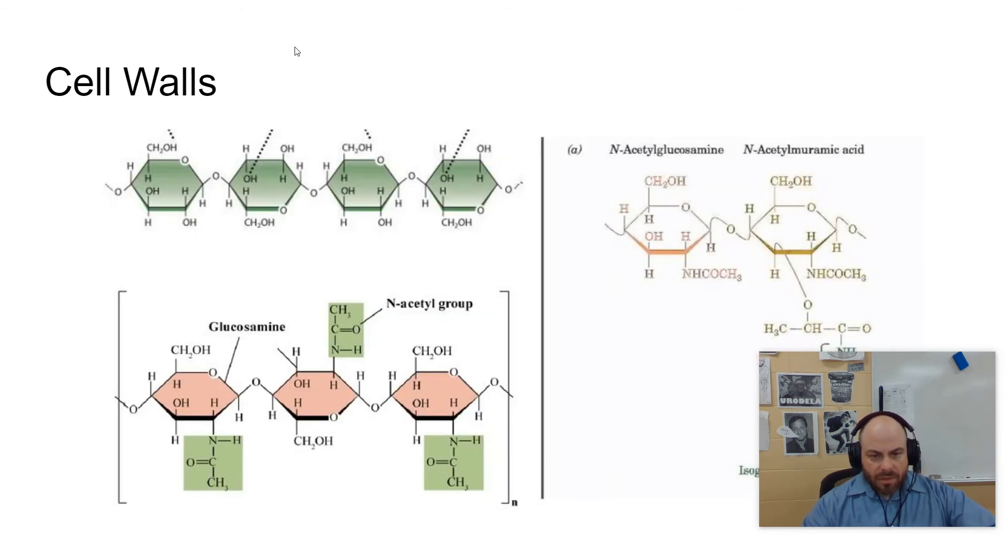So animal cells do not have cell walls by definition. There are three types of organisms that have them, plants, fungi, and prokaryotes. Here are the examples of what they're composed of. Plants are composed of cellulose. Cellulose is a complex carbohydrate, which you see here.